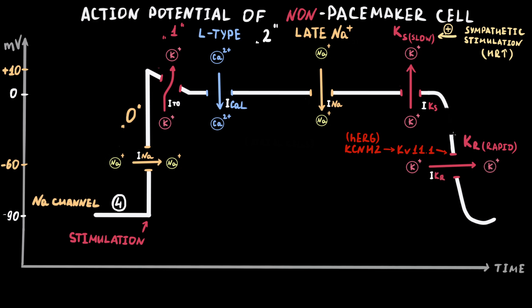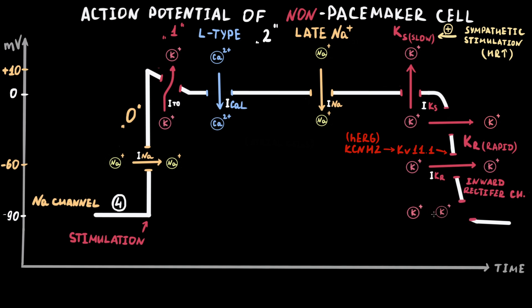Slow outward potassium channels are also active during phase 3 of the action potential. The last outward current involved in the terminal part of repolarization is the inward rectifier potassium current. This channel can work in both outward and inward directions depending on the action potential value and phase, but in the terminal part of repolarization it provides outward potassium current. Phase 3 completes the action potential cycle with return to rest in phase 4, preparing the cell for the next stimulus.